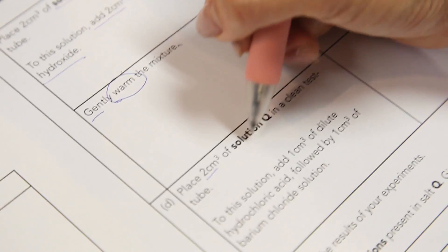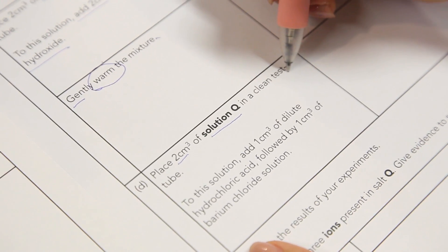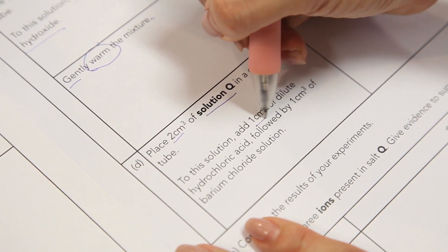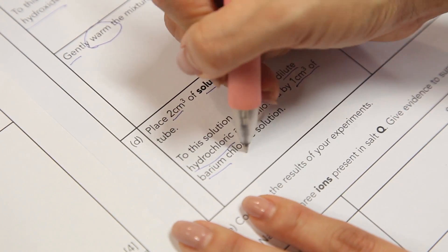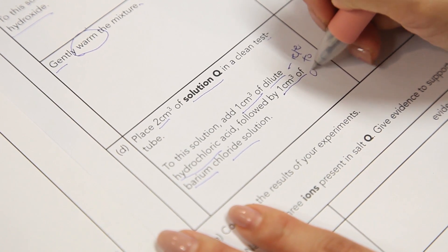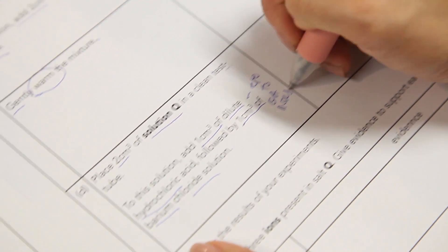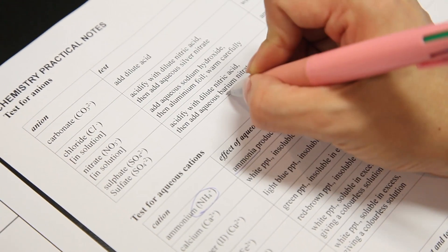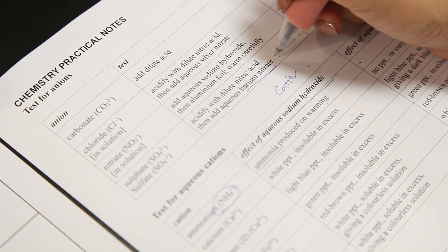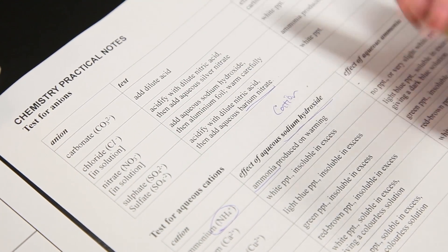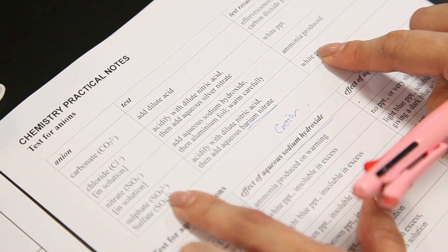To another 2 cm3 of Solution Q in a test tube, add 1 cm3 of dilute hydrochloric acid followed by 1 cm3 of barium chloride. Also refer to QA notes. Over at this portion, they use barium nitrate. Sometimes we use barium nitrate. Sometimes we use barium chloride. But the observation is to test for the sulfate.